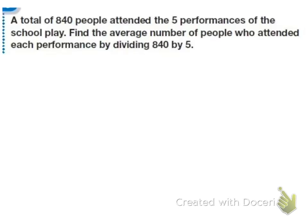Let's go back to that other problem. We have a total of 840 people attended the 5 performances of the school play. Find the average number of people who attended each performance by dividing 840 by 5. I would use short division for this practice. So we have 840 divided by 5.